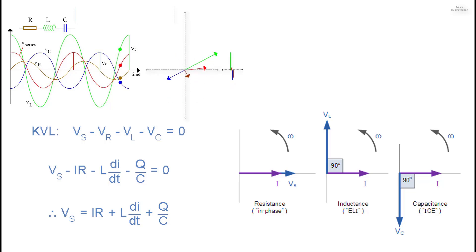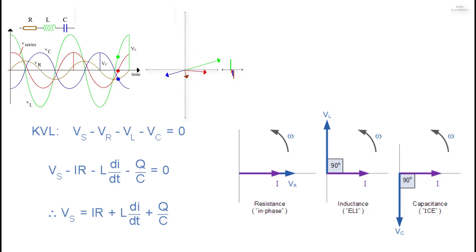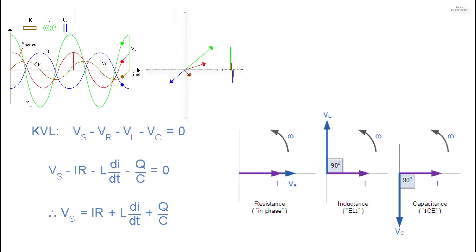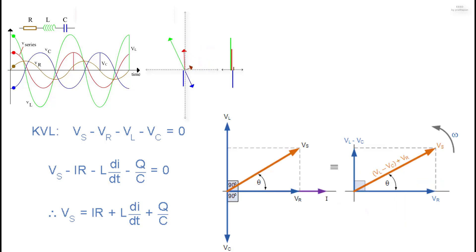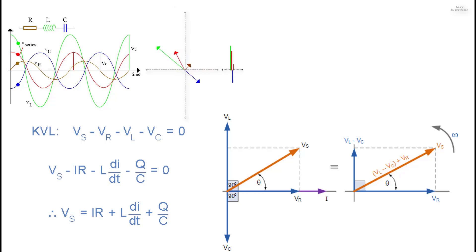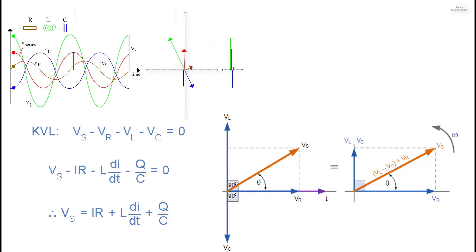Since the current flowing through the circuit is common to all three circuit elements, we can use this as the reference vector with the three voltage vectors drawn relative to it at their corresponding angles. The resulting vector VS is obtained by adding VL and VC together and then adding this sum to VR. The resulting angle between VS and I is the circuit's phase angle. The voltage vectors produce a rectangular triangle comprising hypotenuse VS, horizontal axis VR, and vertical axis (VL − VC), forming a voltage triangle to which we can apply Pythagoras's theorem.